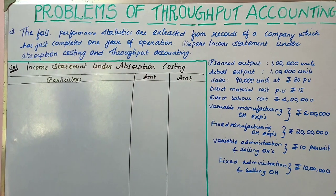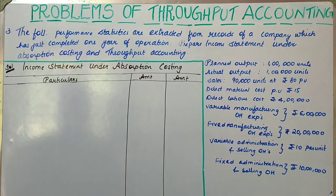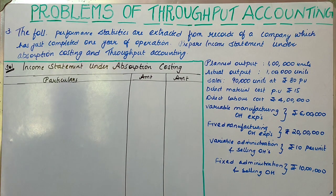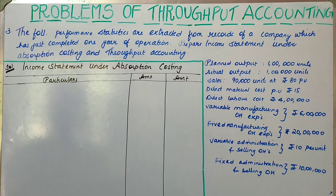Welcome back. We are going to discuss the last model of problems from Throughput Accounting. In the given question, they have given you certain information regarding the expenses of a company, the output, the sales of the company. They ask you to prepare an income statement using both methods — that is, using absorption costing and using Throughput Accounting.